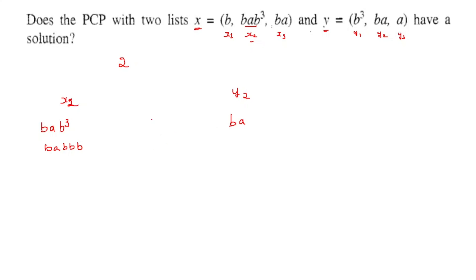To perform a match I can take index 1. So concatenating gives me BABABBB on the left. On the right I take Y1, giving BABBB. Is there a match? No, I have an extra B on the left. So again I have to select another word and concatenate. Let me take index 1 again, giving another B appended on the left and B on the right from Y1. Now checking: left has BA followed by 6 Bs and right has 5 Bs. Still no match.